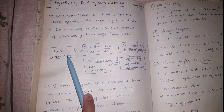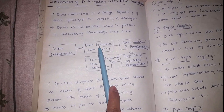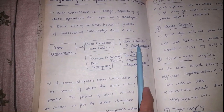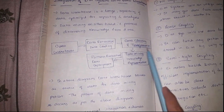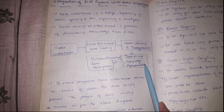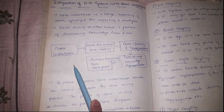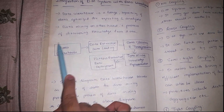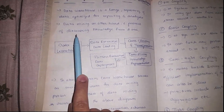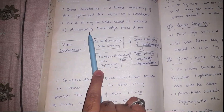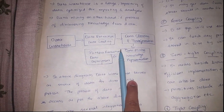In the entire process, we have the data warehouse where data will be extracted and loaded. The second and third steps involve data cleaning and transformation, followed by data mining and knowledge representation. Basically, we are using the data warehouse as a source of our data and performing all the operations on it.